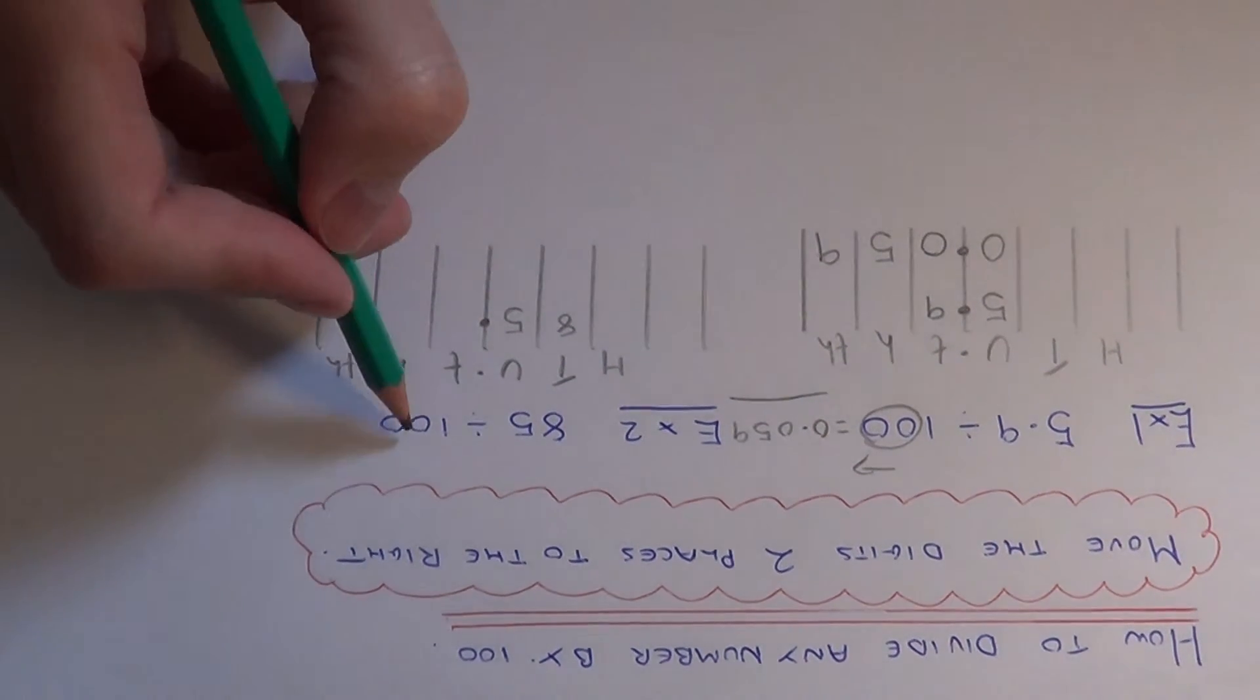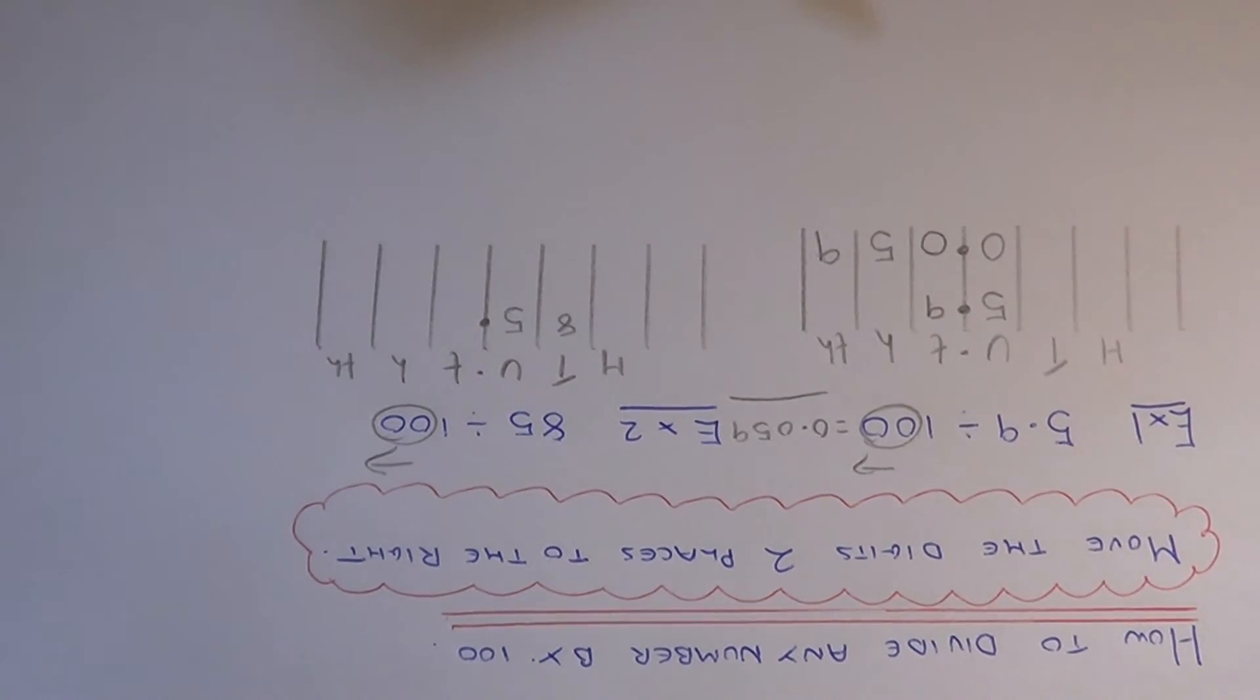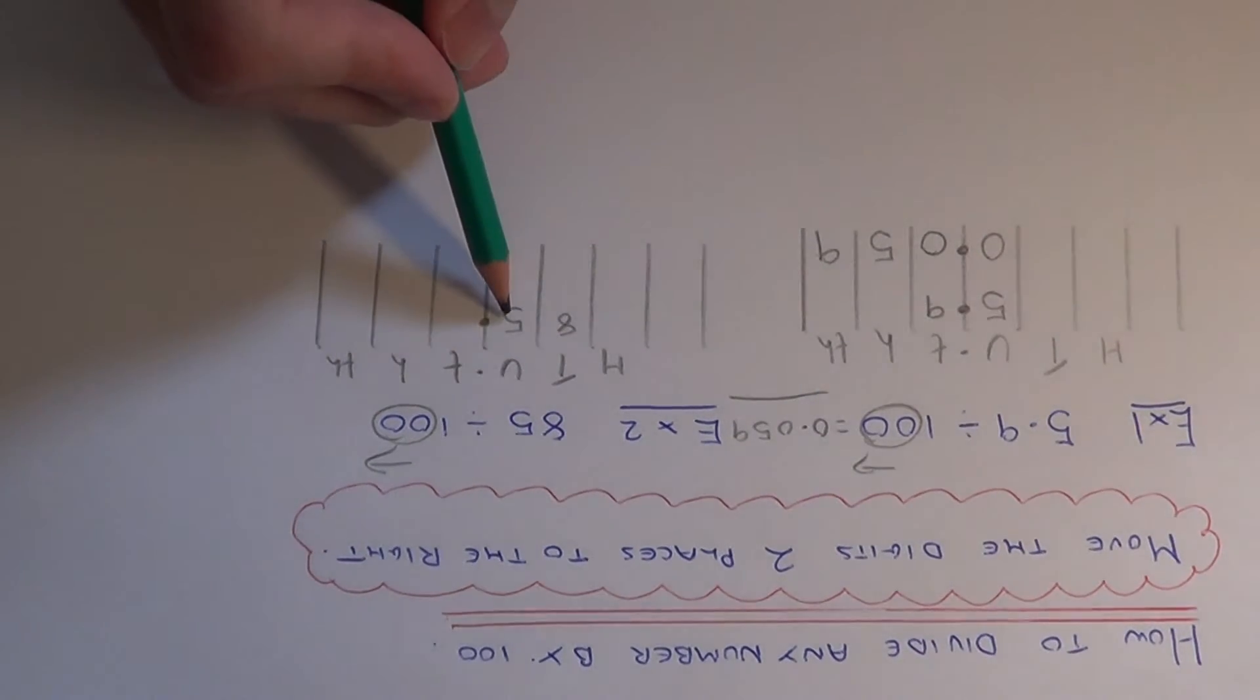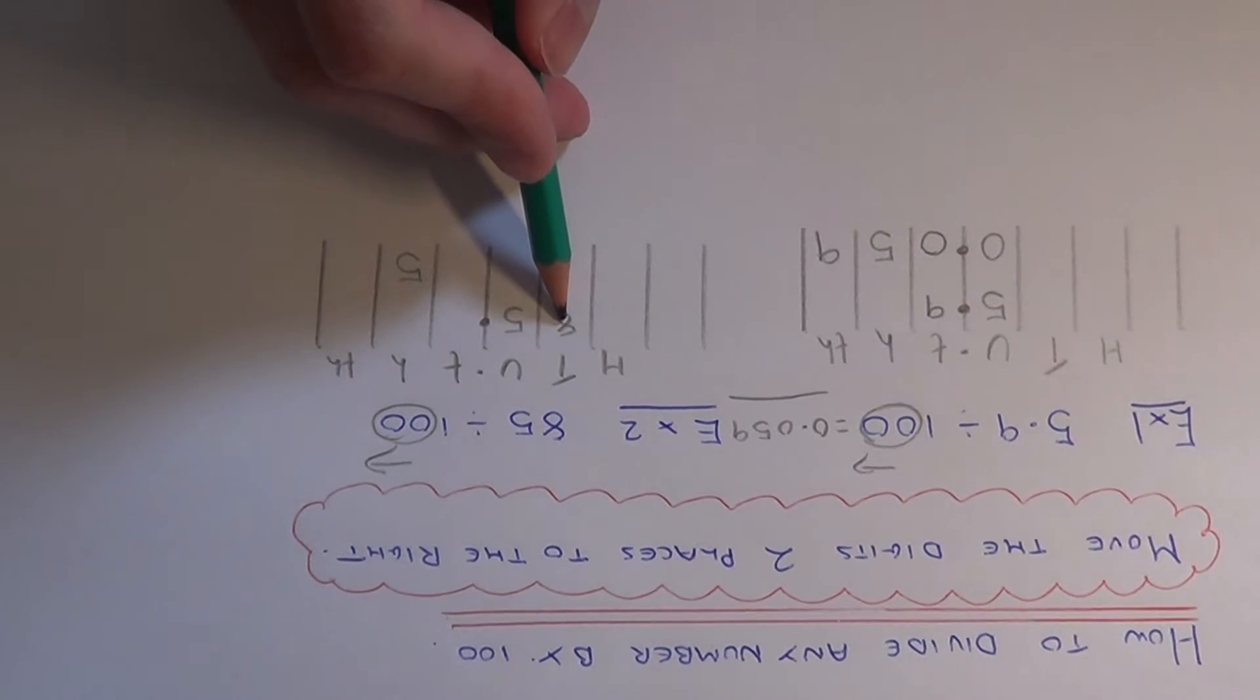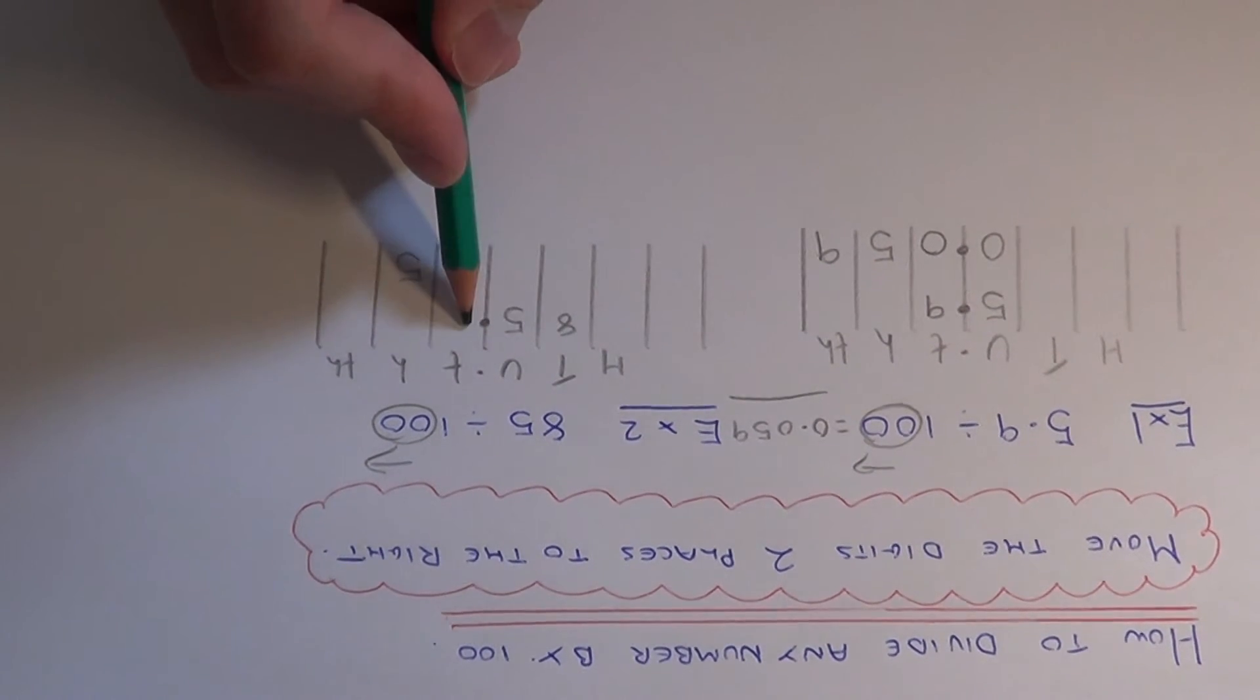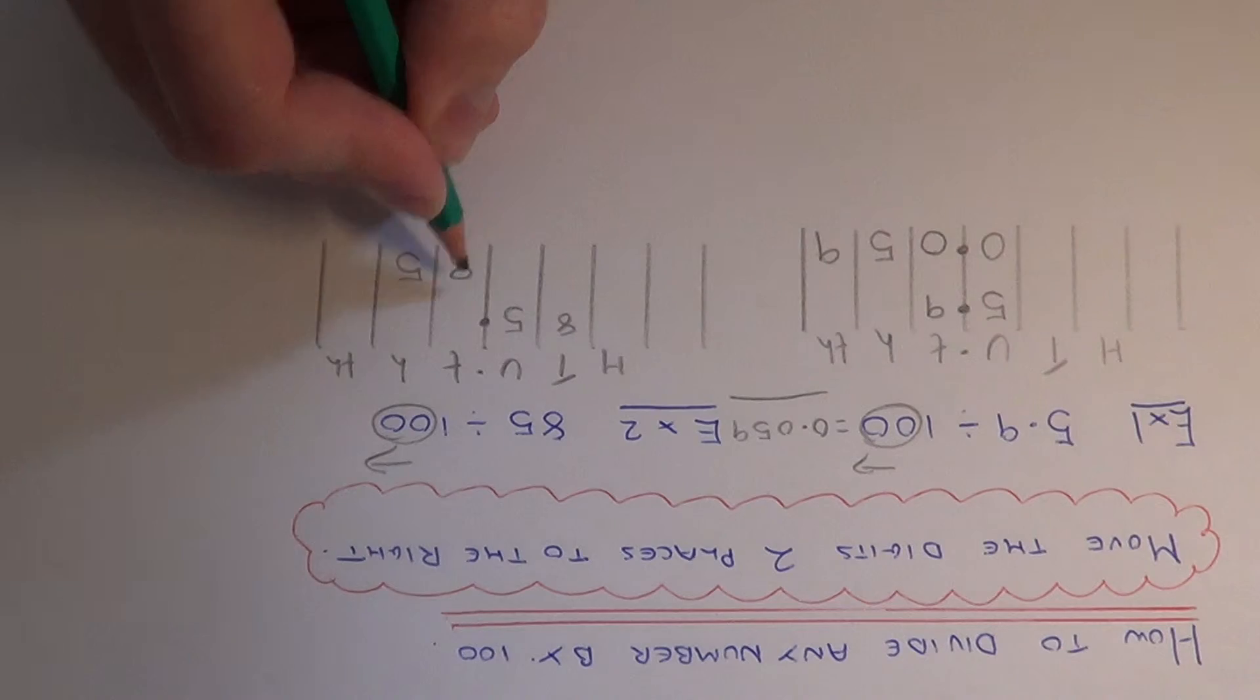Again, we're dividing by 100, so move the digits two places to the right. Let's move the 5 first: 1, 2. The 5 goes in the hundredths column. Move the 8 next: 1, 2. Put the 8 in the tenths column.